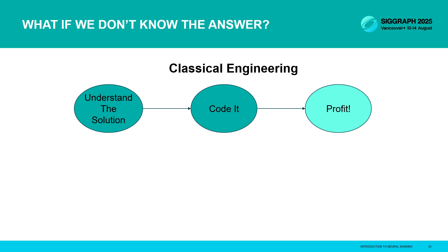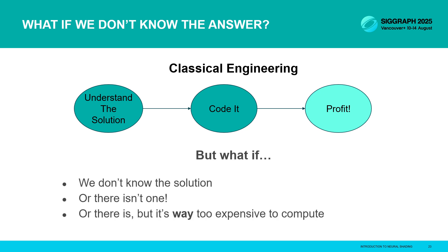Unfortunately, though, there are times when this process doesn't really work. Sometimes we might not be able to figure out a solution, or we might even be able to prove mathematically that there is no solution to something. Or what's most important to us for this course is we might know the solution and we might be able to do the math, but it's simply too expensive to do in real time.